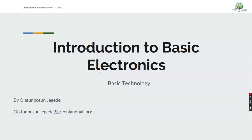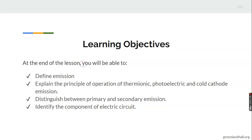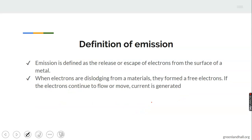So get ready and let's continue to learn. Our learning objectives for today: number one, you should be able to define emission and explain the principles of thermionic, photoelectric, and cold cathode emission. You should be able to distinguish between primary and secondary emission, and identify the components of electric circuits.